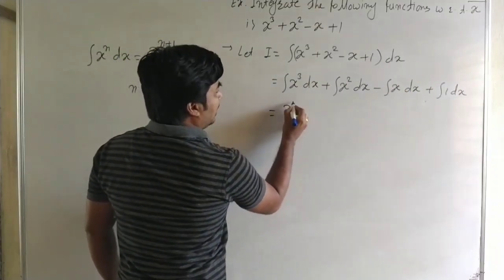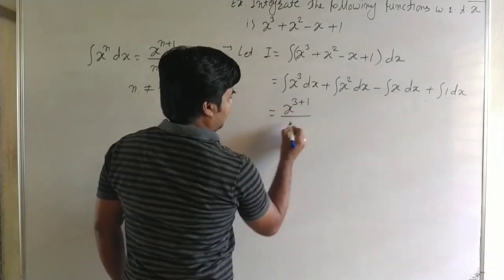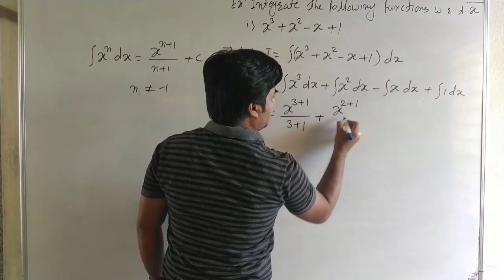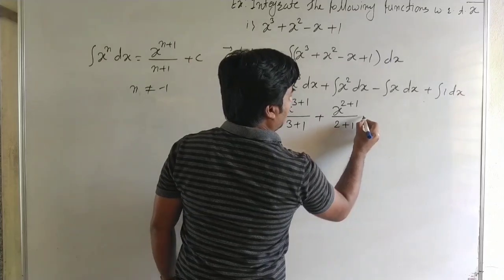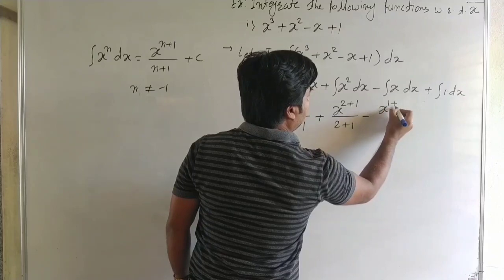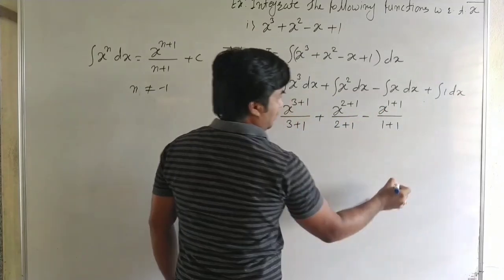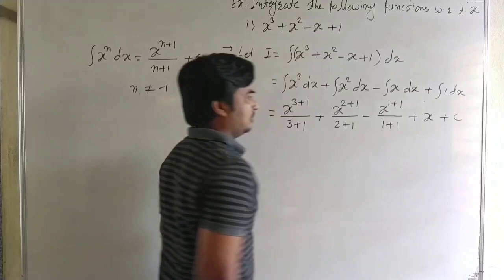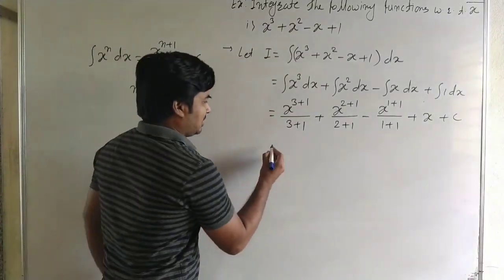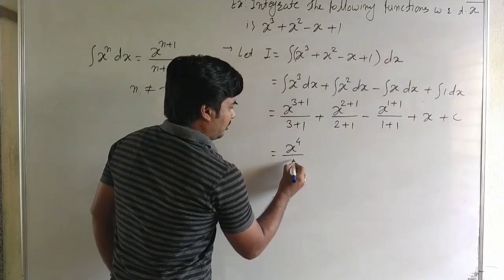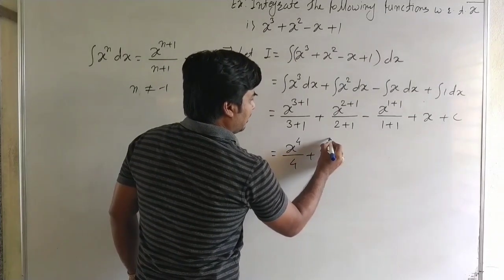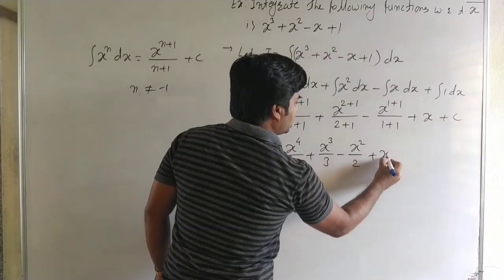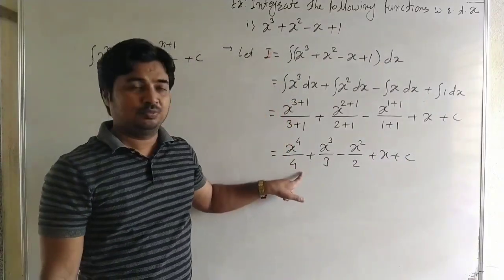Applying the formula: xⁿ⁺¹/(n+1) for each term. For the constant 1, integration of 1 dx = x. The last answer is x⁴/4 + x³/3 − x²/2 + x + C, where C is the integral constant. That is the integration of this function.